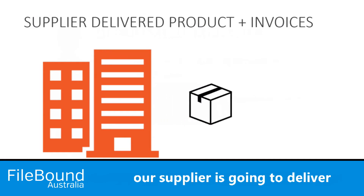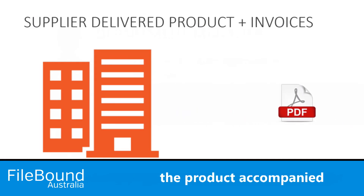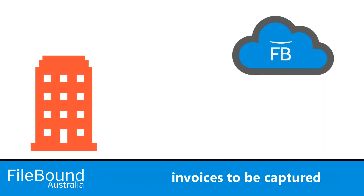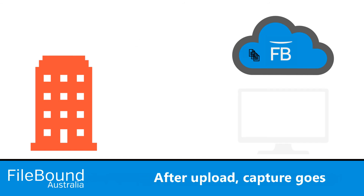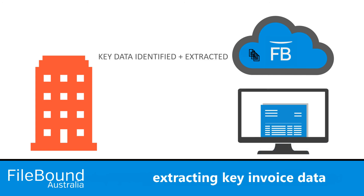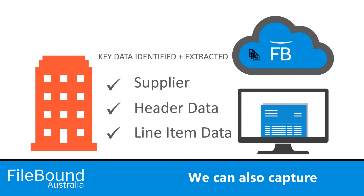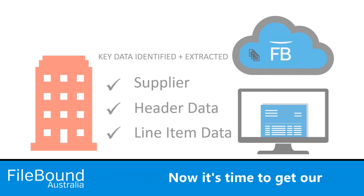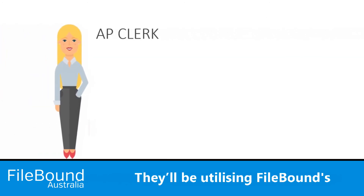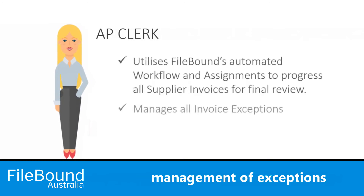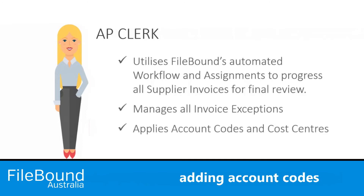At this point in the process, our supplier is going to deliver the product accompanied with the invoice. The Filebound Cloud Work Process Automation Platform facilitates accounts payable invoices to be captured right off the email and uploaded into Filebound. After upload, Capture goes to work identifying and extracting key invoice data such as the supplier, header data and optional line item data. We can also capture BSB and account numbers for validation and cybercrime prevention. Now it's time to get our accounts payable clerk into the process. They'll be utilising Filebound's workflow assignments, which will enable the efficient management of exceptions, plus other key tasks such as adding account codes and cost centres.